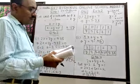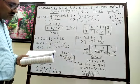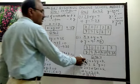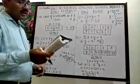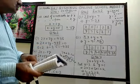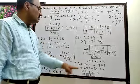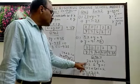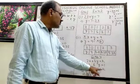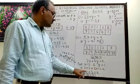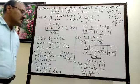Question number 4: find the value of K if x equals 2, y equals 1 is a solution of the equation 2x plus 3y equals K. Since x equals 2 and y equals 1 is a solution, substitute these values: 2 into 2 plus 3 into 1 equals K, which gives 4 plus 3 equals K, so K is equal to 7.